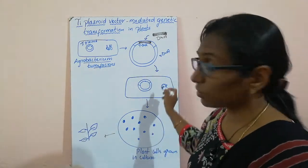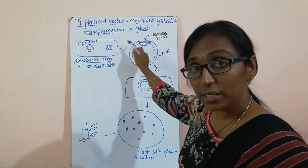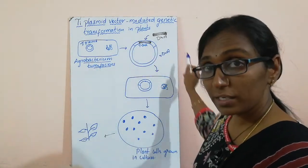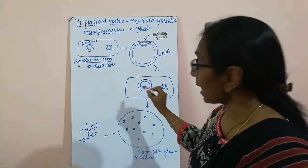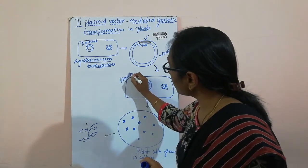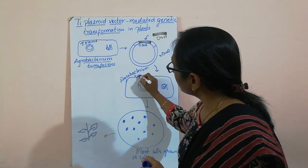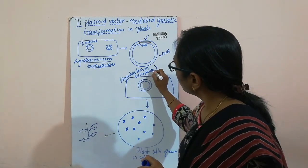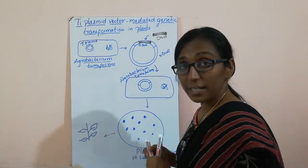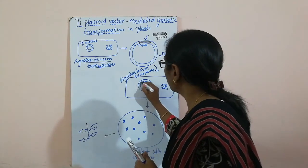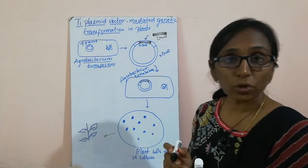The recombinant DNA is being transformed back into the host cell — that is, back into the bacterial cell. The recombinant DNA is reinserted into Agrobacterium tumefaciens, now carrying the desired DNA.